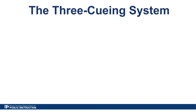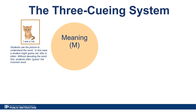Here is a description of the 3-cueing system and some examples of how it is used during instruction and why it is ineffective for our earliest readers. Meaning cues, also called semantic cues, can be seen in instruction when we pre-teach some of the words in the text or use context clues in text, often pictures, to guess at a word. In this example, the student sees a picture of a cat, but without sounding out the word, the student might say cat, kitty, or kitten.